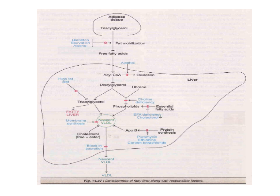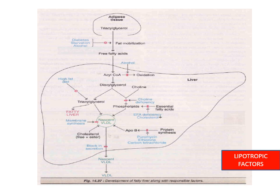Apoprotein B promotes the synthesis of nascent VLDL, but puromycin, ethionine, and carbon tetrachloride inhibit protein synthesis, and ultimately inhibit apoprotein synthesis — the inhibition of nascent VLDL formation results in fatty liver. These are all about the development of fatty liver. One more factor is lipotropic factors — these are factors that are related to fatty liver formation and development.